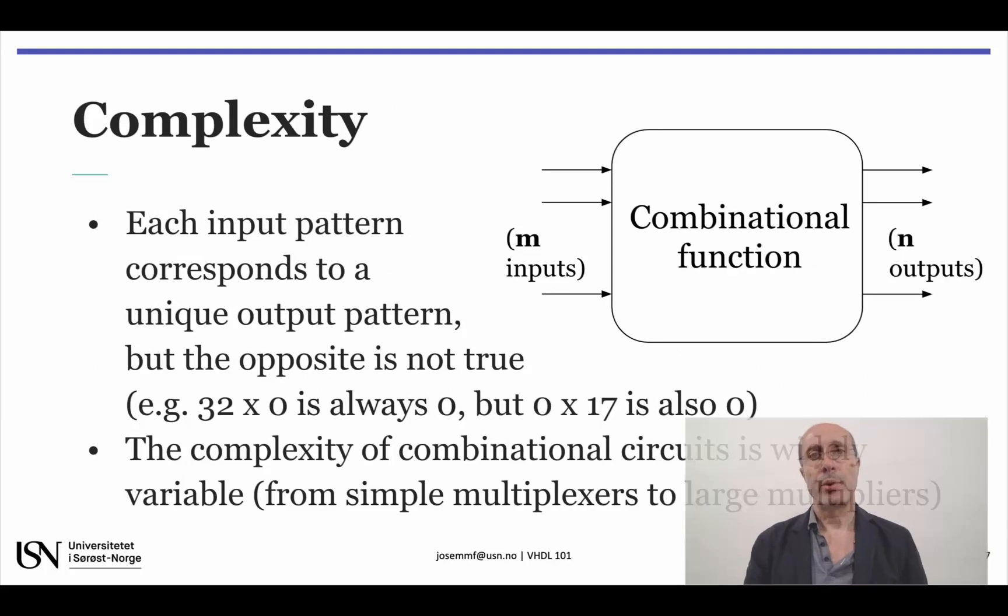If a circuit is able to store information about past events, then the same input pattern may lead to different output patterns according to what happened before. As it happens in a combinational circuit, since it has no information about the past, each input pattern can only correspond to one output pattern. Notice, however, that the opposite is not true as proven by the example shown here.